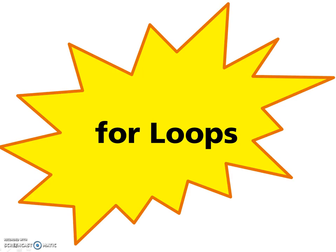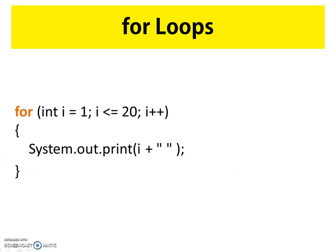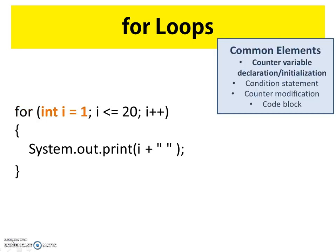Now that we understand the four common elements of loops, we're going to explore FOR loops. Here's an example of a FOR loop. The 'for' keyword highlighted in orange tells the compiler we're using a for loop. It's a clean loop — all the necessary statements are listed within the parentheses, and below the parentheses we see the code block.